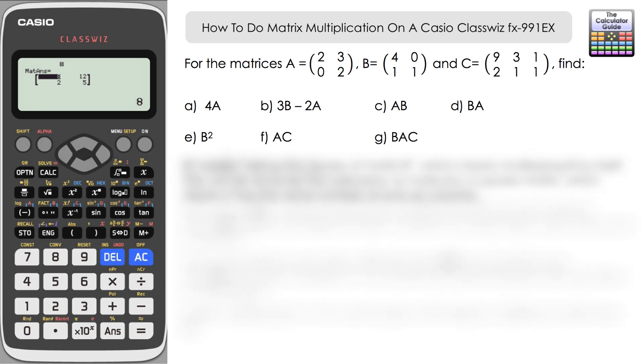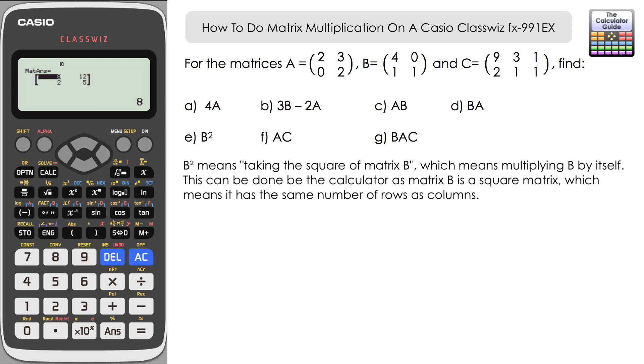Part E, we've got B squared. B is a square matrix. It's 2 by 2, which means we can square it. And relatively straightforward, option matrix B, and then squared, and that should square the matrix for us, 16, 0, 5, and 1.